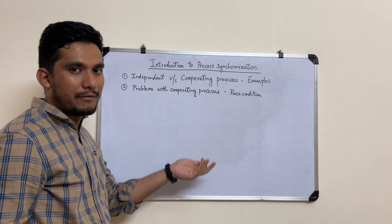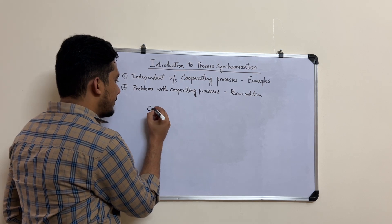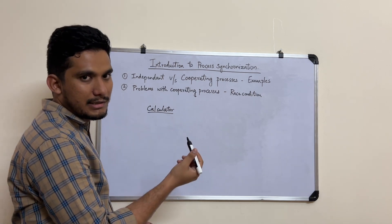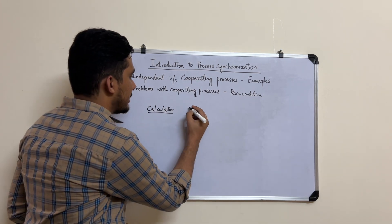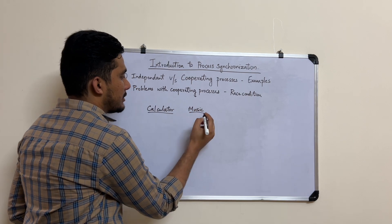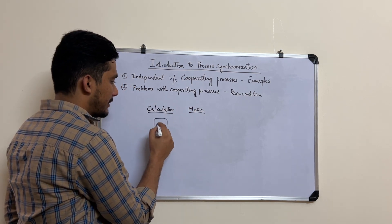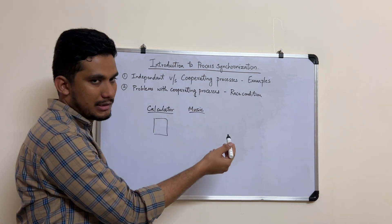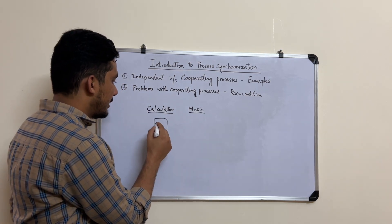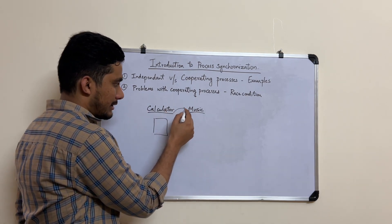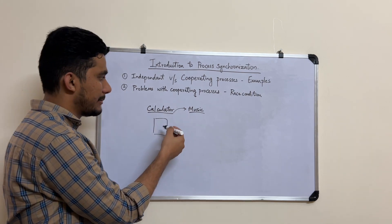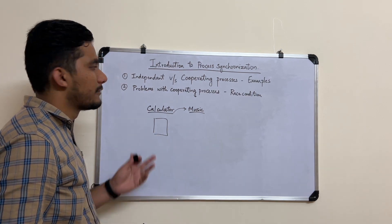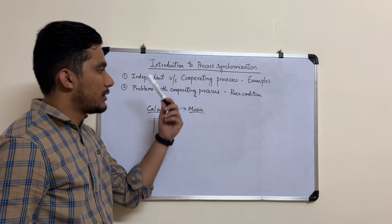Neither does an independent process affect other processes running. For example, consider a calculator process. This can be considered an independent process because another process, like a music player running in the background, neither affects the calculator nor does the calculator affect the music process. You can do tasks independently without disturbing or getting disturbed by other processes.